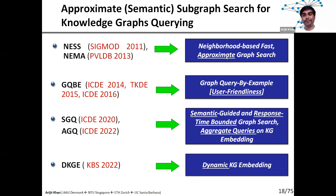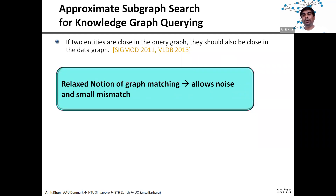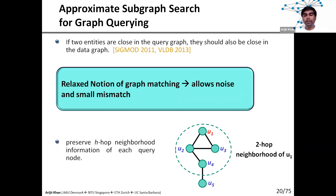Let's start with our early works MASON and NEMA, which are based on approximate neighborhood-based matching. The idea is quite simple: we want some approximate match, allowing certain noise and small mismatches. If two nodes are close in the query graph, they should also be close in the data graph. Instead of preserving the exact structure, we preserve the proximity or closeness among nodes. We convert the neighborhood of each node as a vector — not just the immediate one-hop neighborhood but up to a certain number of hops, like two hops.